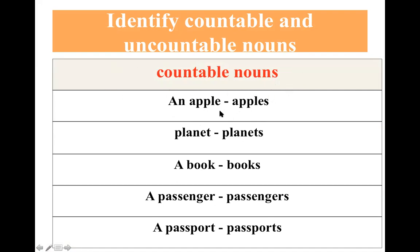Countable nouns — danh từ đếm được — ví dụ: an apple, một quả táo. Nhiều quả táo là apples. Planet — hành tinh — một hành tinh, nhiều hành tinh là planets. A book — một cuốn sách, nhiều cuốn sách là books. A passenger — một hành khách, nhiều hành khách là passengers.